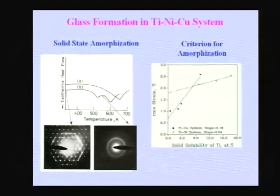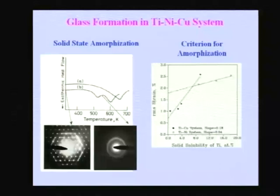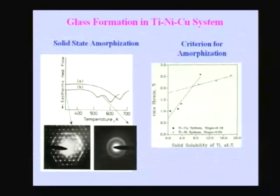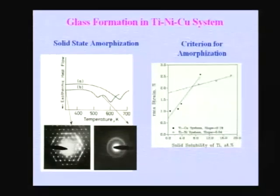Electron diffraction patterns confirm these transformations. In the as-milled condition, the crystalline pattern with many defects is seen. Heating to the end of the first DSC peak and cooling back, then examining in TEM, shows an amorphous ring. Heating to the second stage gives equilibrium crystals back. By stopping at a particular position, one can observe solid state amorphization - similar to what is observed in diffusion annealing.